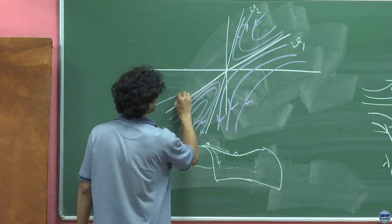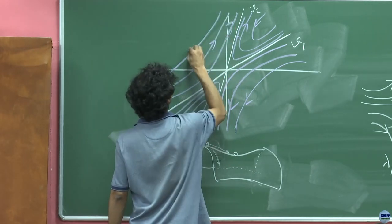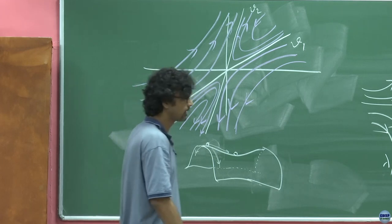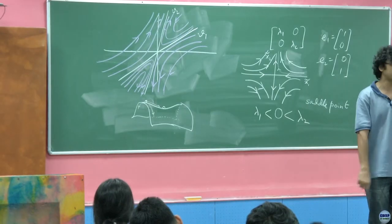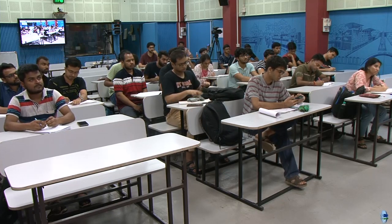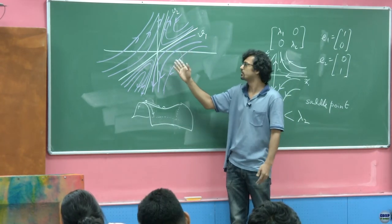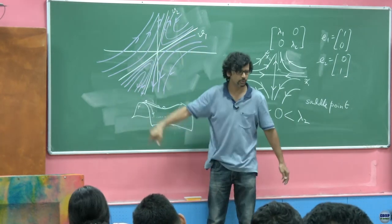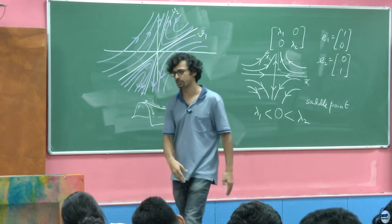For planar dynamical systems, understanding what kinds of numbers lambda 1 and lambda 2 allow a matrix acting on a vector to produce just a scaling of that vector is useful in solving such differential equations. When we say 'solution,' we mean the phase portrait — pick your initial condition and due to uniqueness of the solution, you can draw the trajectory. This is a solution of the differential equation.